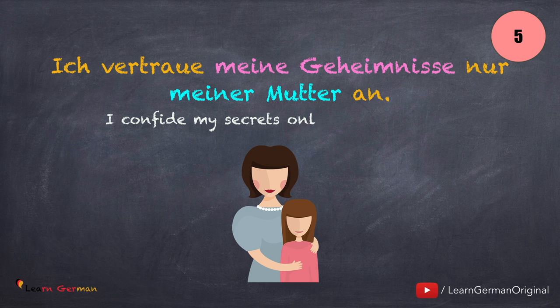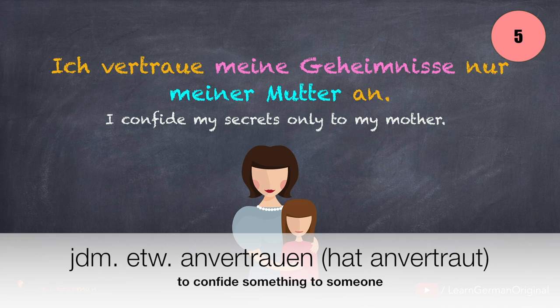The next sentence is: Ich vertraue meine Geheimnisse nur meiner Mutter an. Anvertrauen ist ein trennbares Verb. Jemandem etwas anvertrauen.